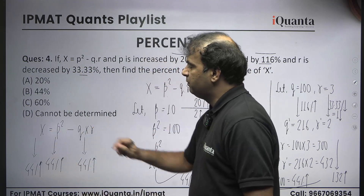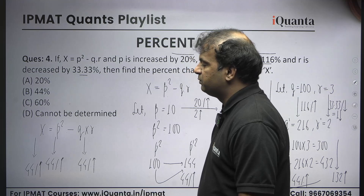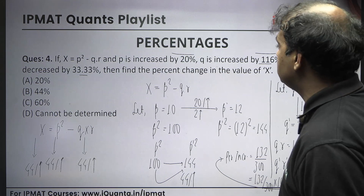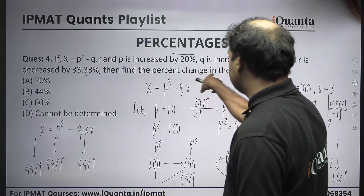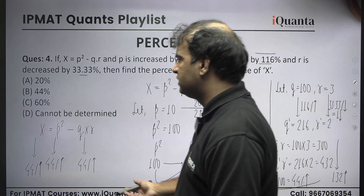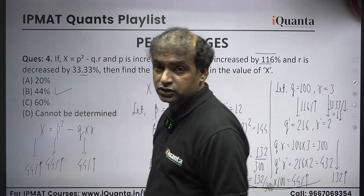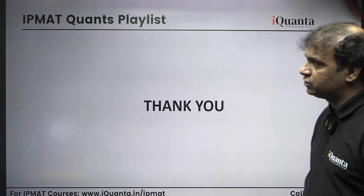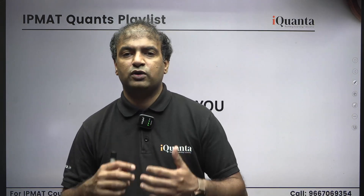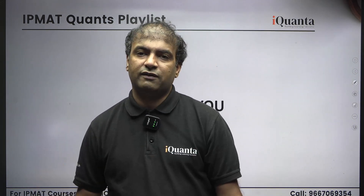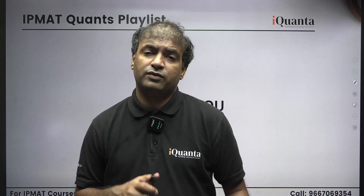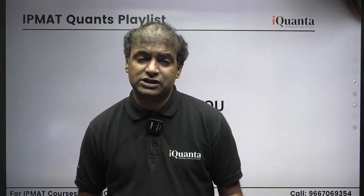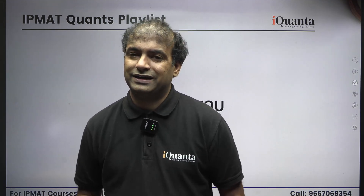In this question, p² and qr are both increasing by 44 percent, which is why x also increases by 44 percent. That is the answer. This is all about the session where we discussed applications of percentage change based on the product form. From the next video, we'll start the new topic: profit and loss. Thank you, keep watching the series and keep practicing. Bye!